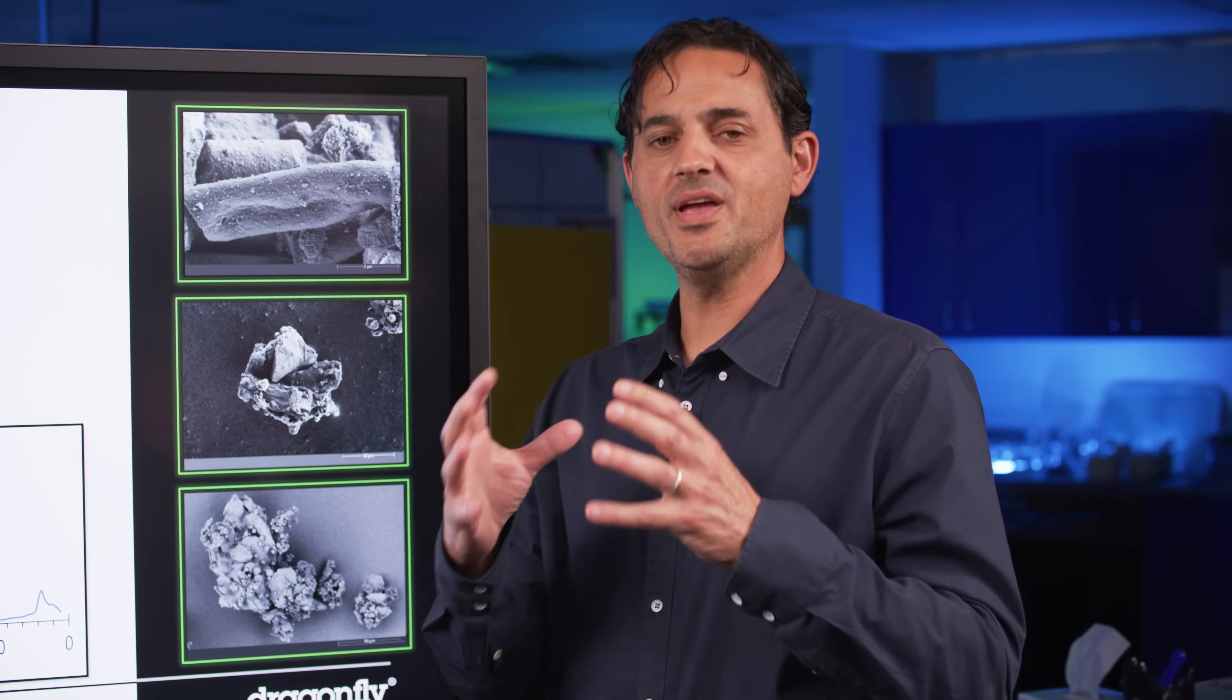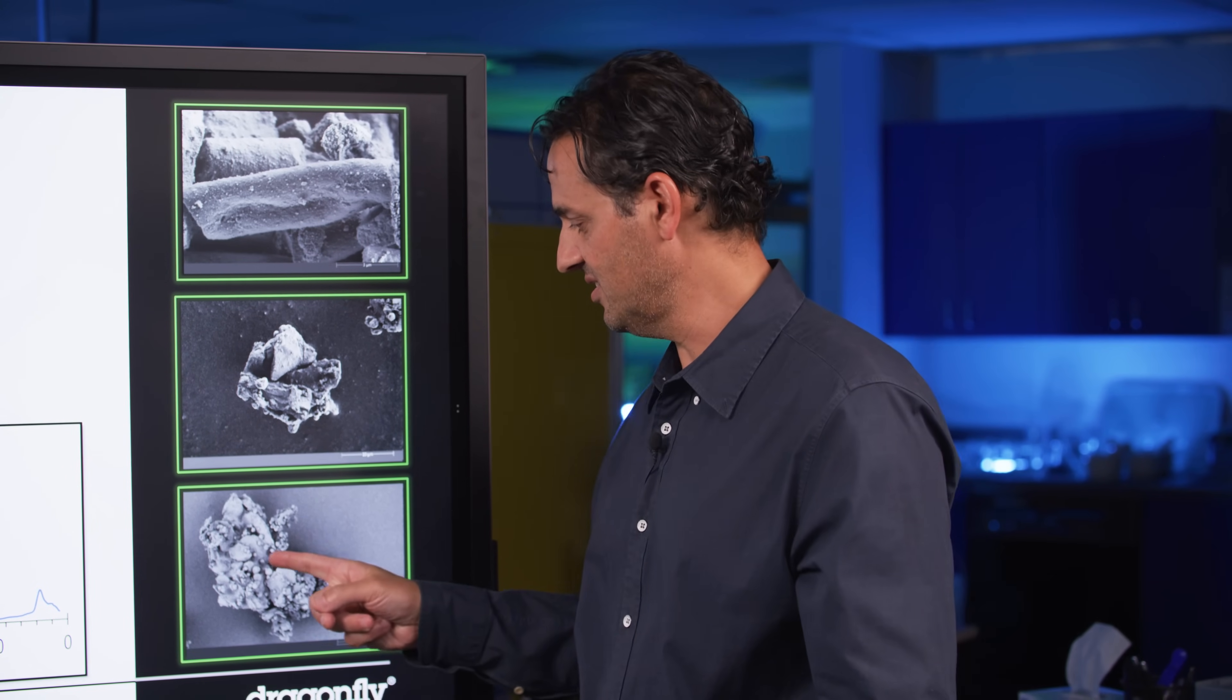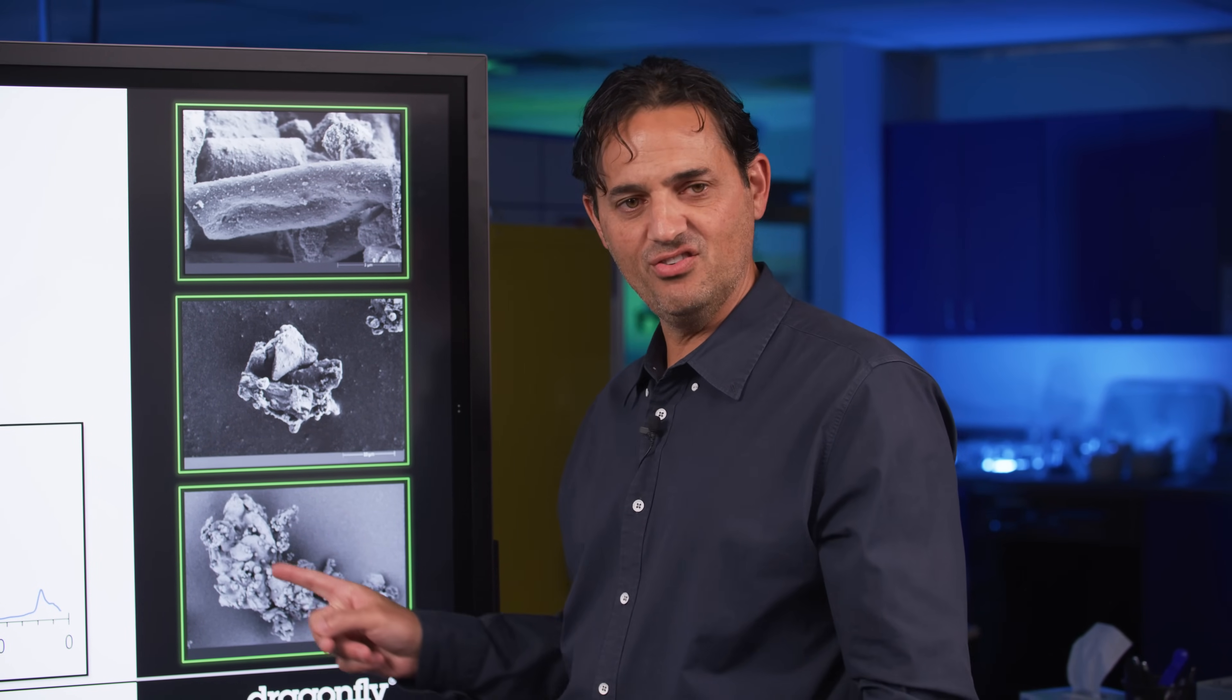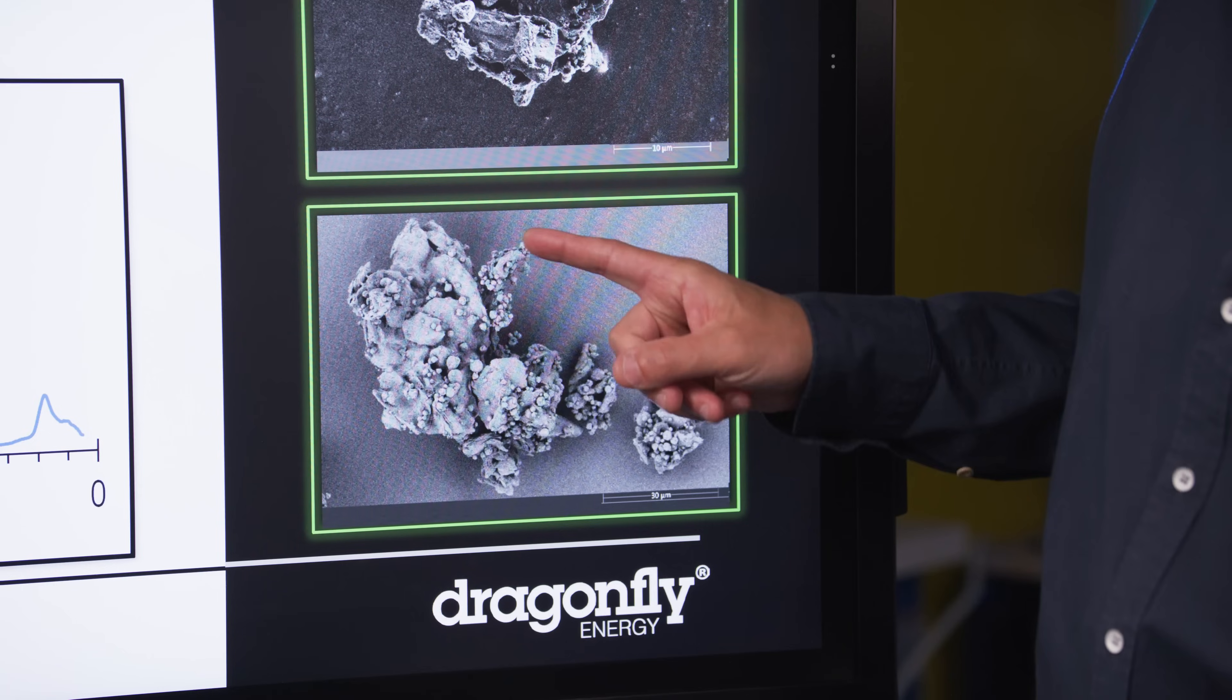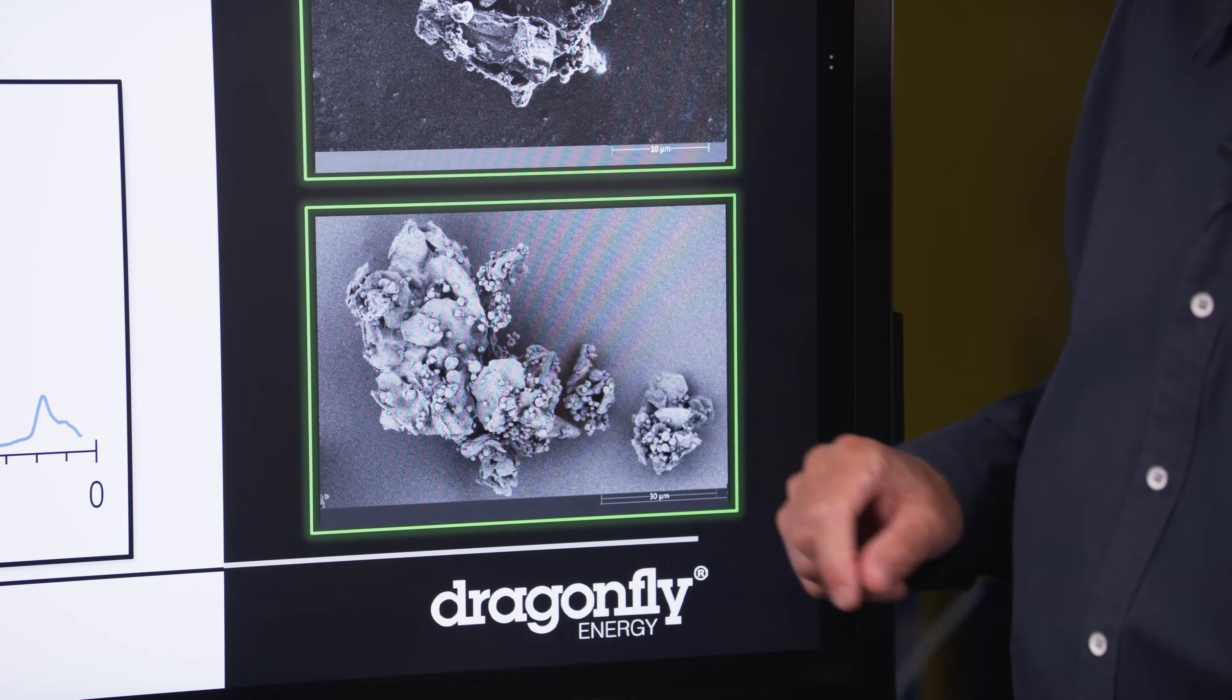And the way we get it to mix really well beforehand is with this process. So this amalgamation you see here, this mess of substances, is graphite, carbon, and the binder.